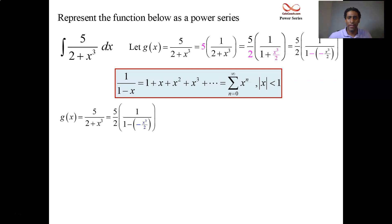So keep the 5 halves outside. Instead of 1 plus x, we have 1 plus a negative x cubed over 2. Instead of plus x squared, we have negative x cubed over 2 squared. Instead of x cubed, negative x cubed over 2 cubed. In the summation, instead of x to the n, negative x cubed over 2 to the n. But don't forget the 5 halves is out there as well. We're doing great. We can now represent the function that's on the inside of the integral. Don't forget we haven't integrated yet.